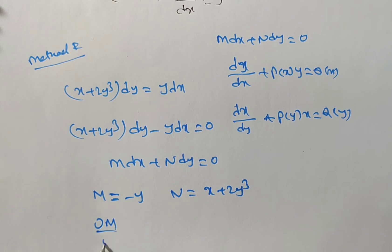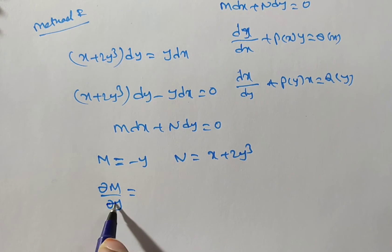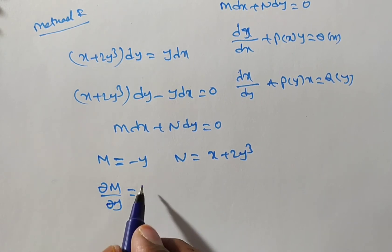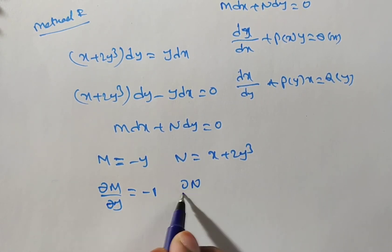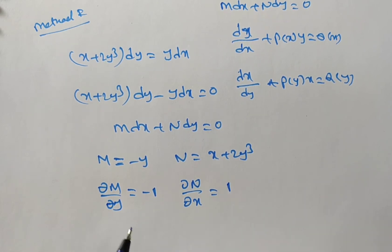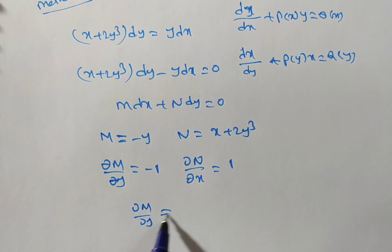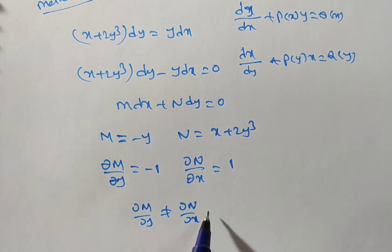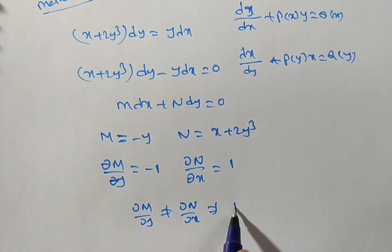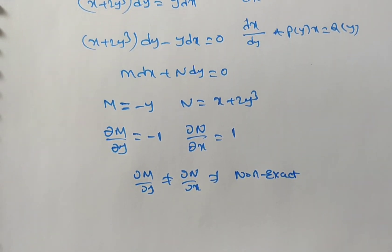Now find ∂M/∂y and ∂N/∂x to verify whether it is exact or non-exact. ∂M/∂y = −1, and ∂N/∂x = 1. Are both equal? No. Since ∂M/∂y ≠ ∂N/∂x, this is a non-exact differential equation.